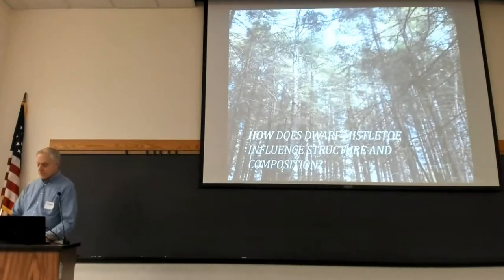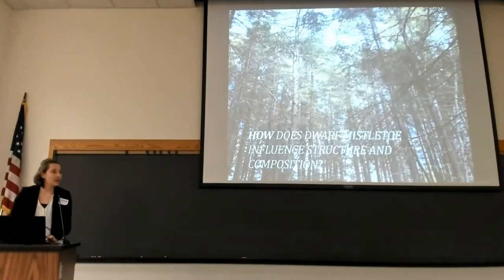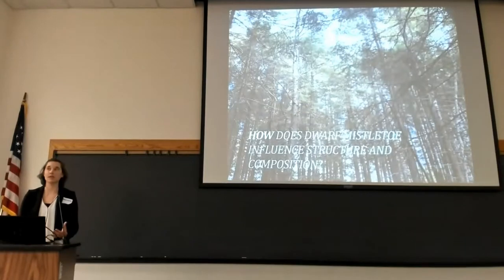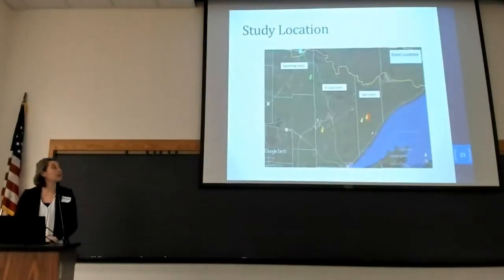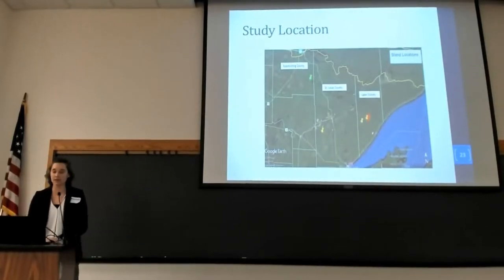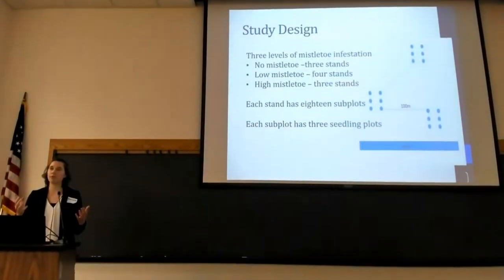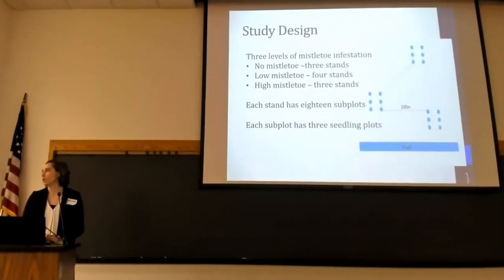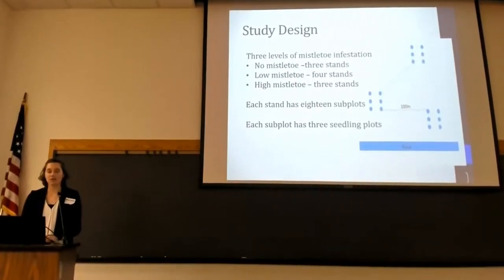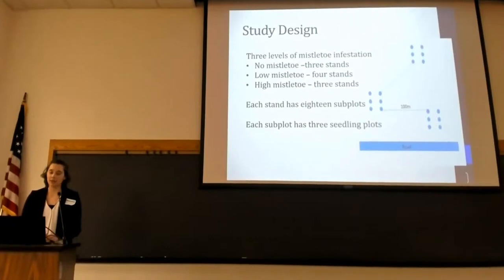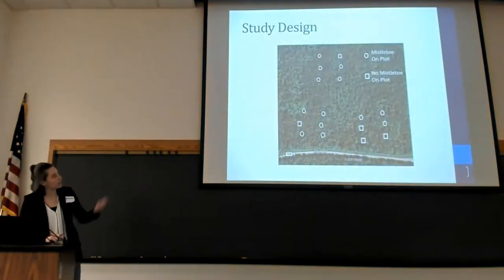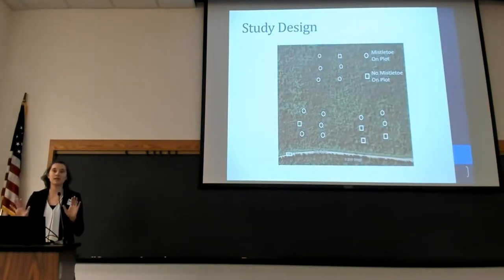We'll bring Marcella back to talk about how structure and composition are affected by dwarf mistletoe. This study used 10 different sites across northern Minnesota, with a broken-up sampling design to capture spatial variability — since dwarf mistletoe is very spatially explicit. We have three levels of infection: no mistletoe, low mistletoe (under about 50% infested), and high mistletoe (over 50% infested). Each stand had 18 subplots, and each subplot had three seedling plots. You can see it spatially grouped in a stand, clearly showing where mistletoe is versus where it isn't.